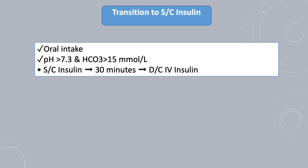Transition to subcutaneous insulin depends mainly on two factors: if the patient is able to take orally — meaning not unconscious or sleepy and not vomiting — and if the patient's pH reaches more than 7.30 and bicarb is more than 15 millimole per liter. The patient will be started initially on subcutaneous insulin, and then after 30 minutes, the insulin infusion will be discontinued.